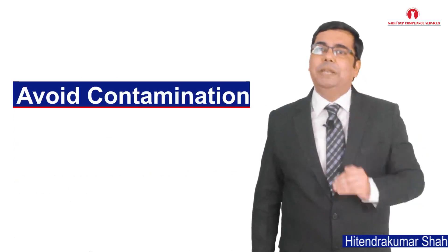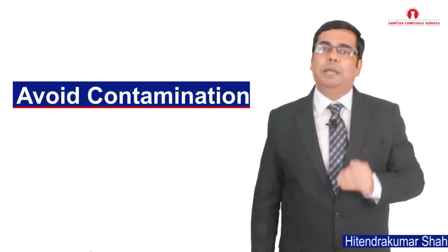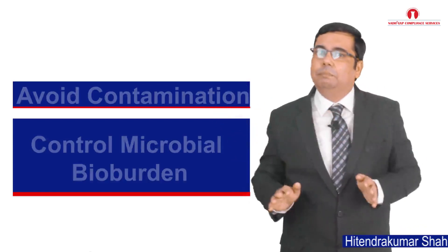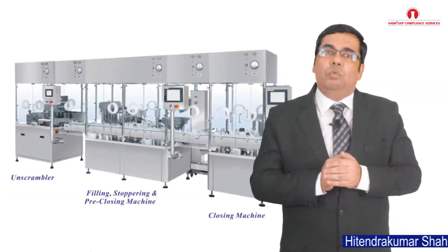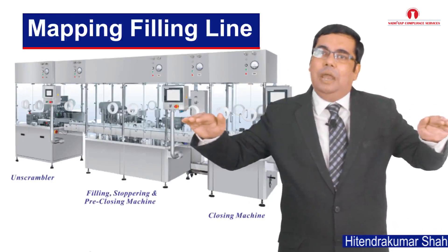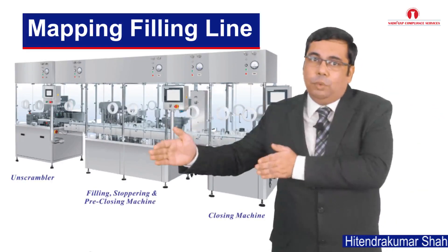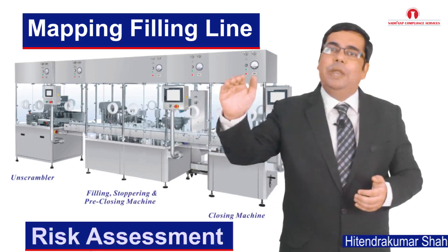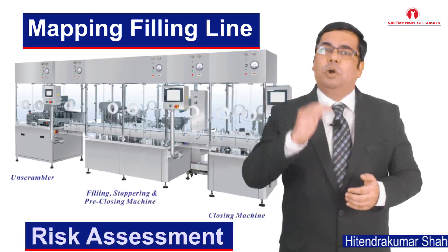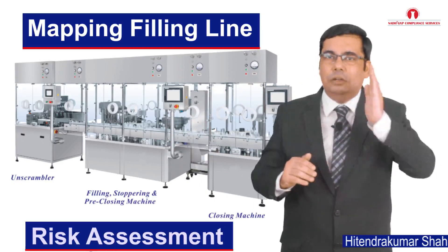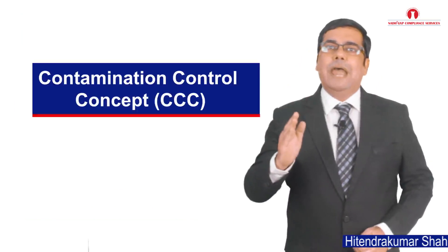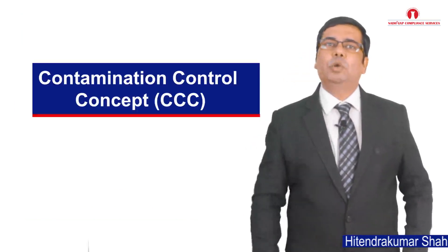We need to understand how to avoid contamination. To avoid contamination, we need to control the microbial bioburden in the area. For this, we can map the existing filling line and the procedures followed so that by performing a risk assessment, we can evaluate possible sources of contamination and accordingly take remediation action to avoid it. It is very important that we focus on the contamination control concept.